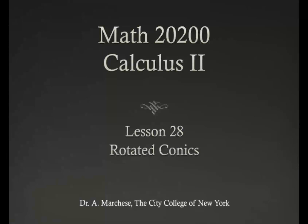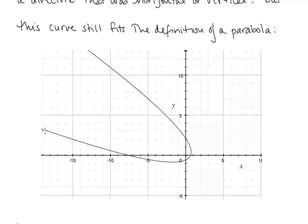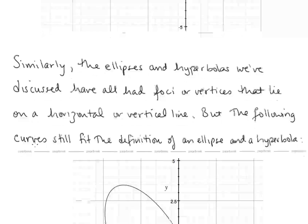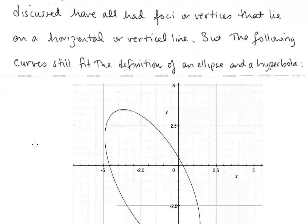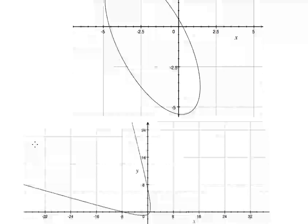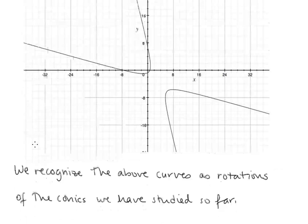This is lesson 28 of our Calculus 2 series: Rotated Conics. In lesson 27, all of the parabolas we discussed had a directrix that was horizontal or vertical. But this curve still fits the definition of a parabola. Similarly, the ellipses and hyperbolas we've discussed have all had foci or vertices that lie on a horizontal or vertical line, but these curves still fit the definition of an ellipse and a hyperbola. We recognize these as rotations of the conics we've studied so far.